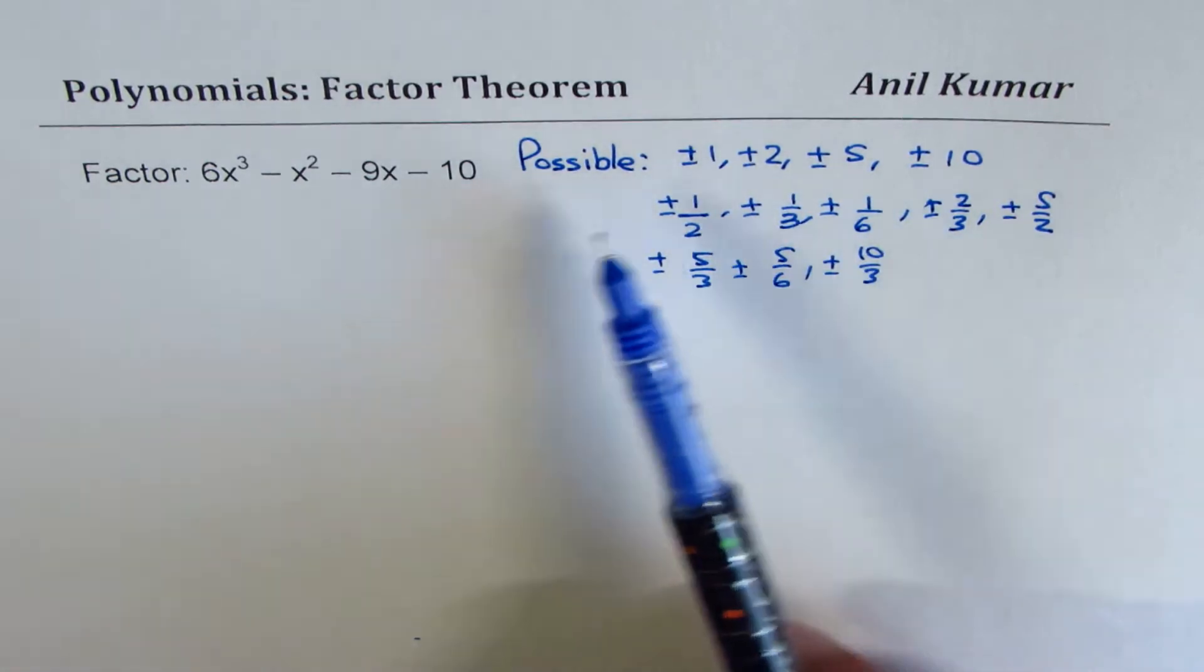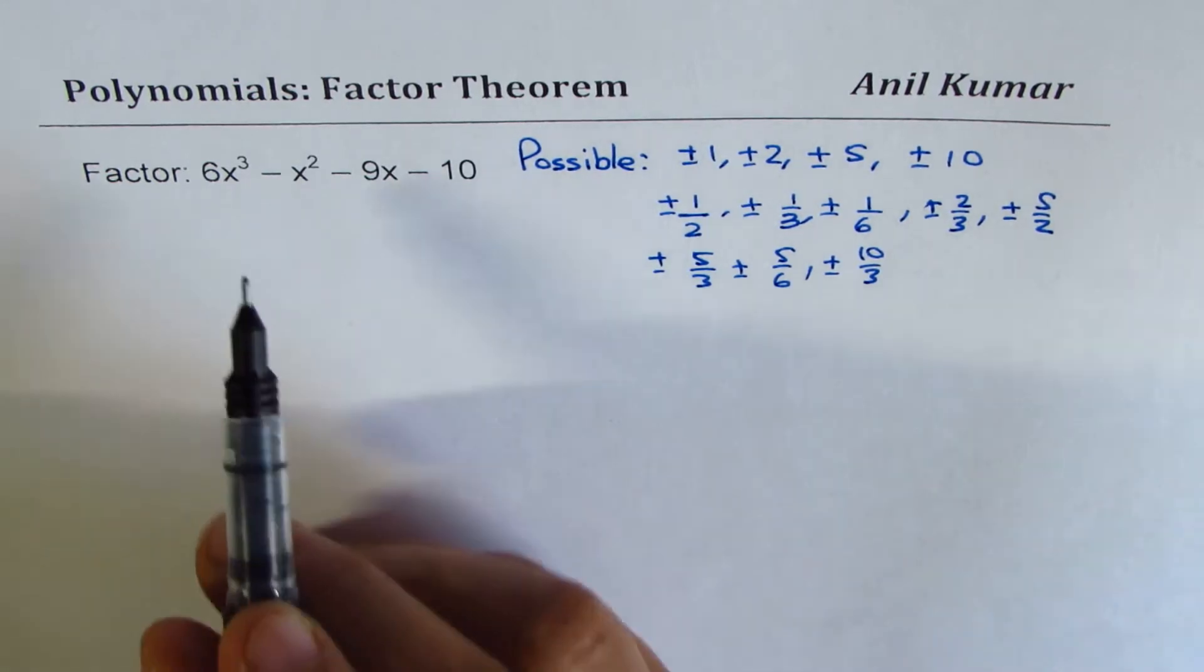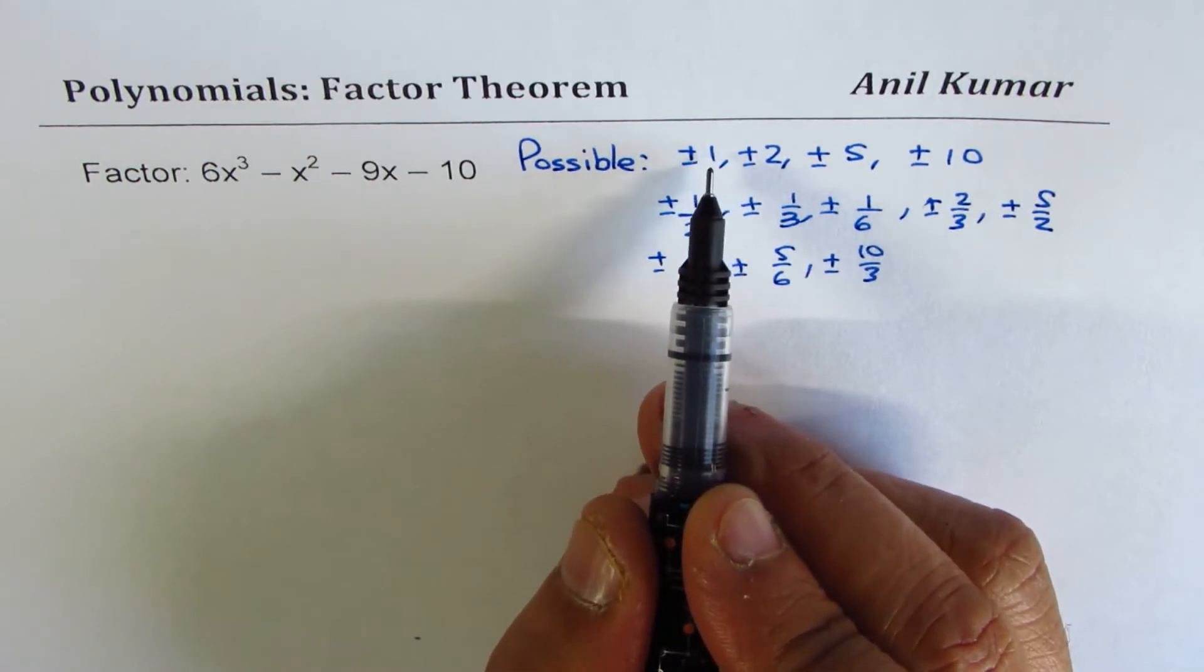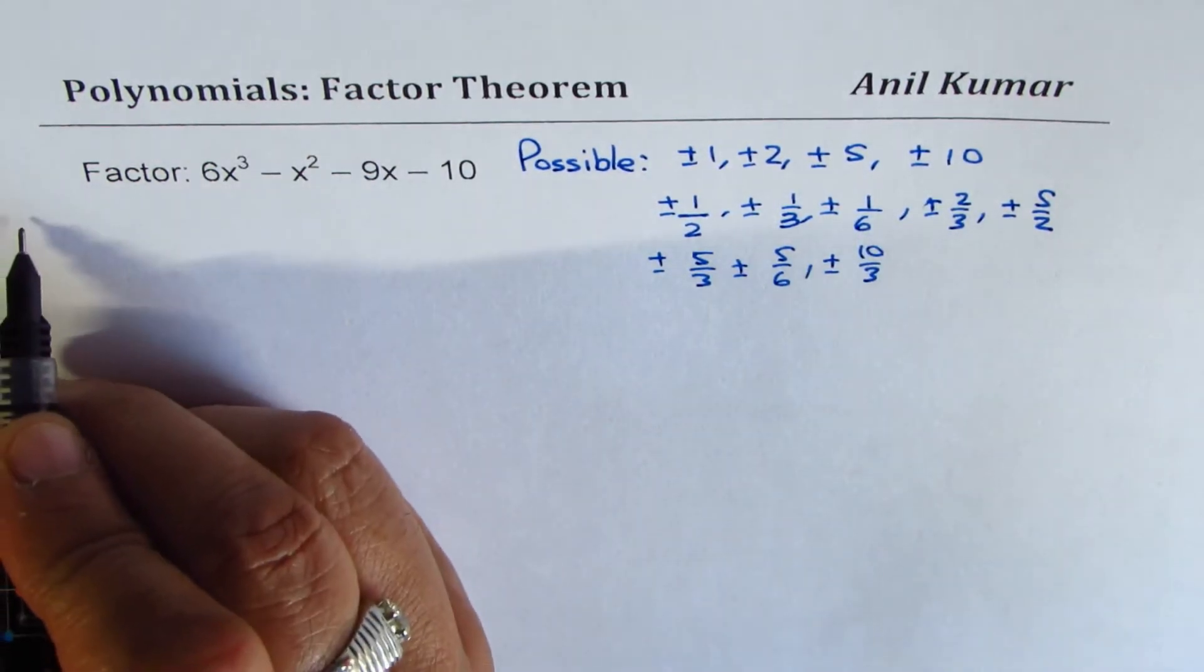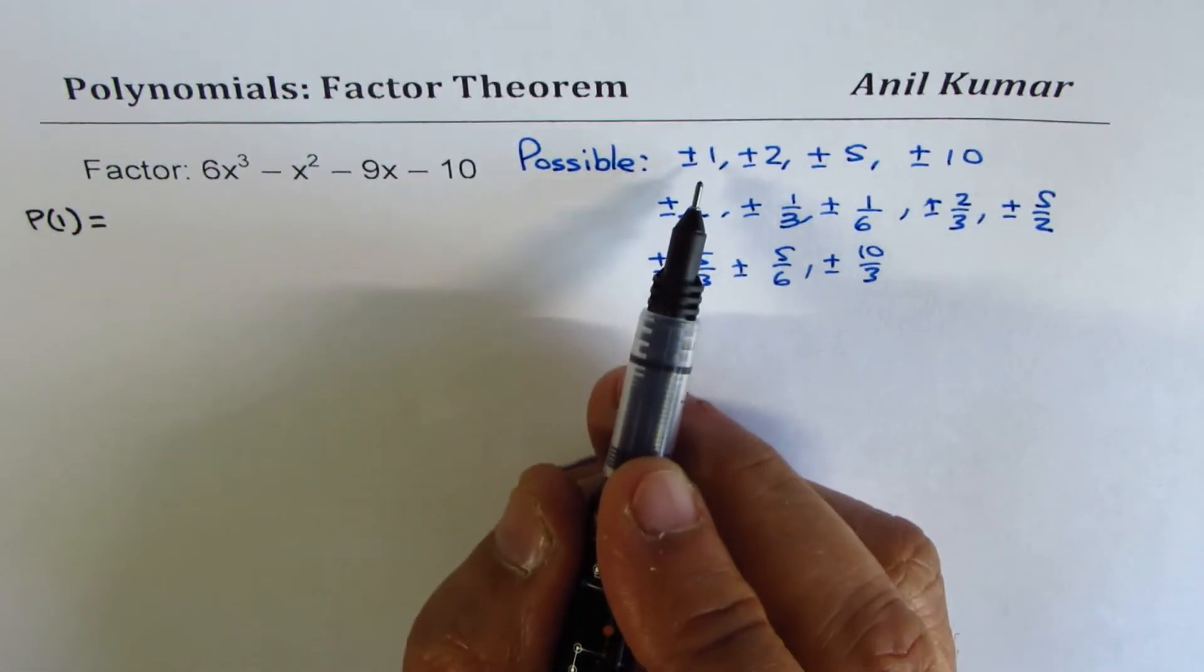Now, working with so many numbers becomes very difficult. So what we'll do here is we'll try to move in a sequence. Let's check the positive answers first. So let's find the value of the polynomial for 1.